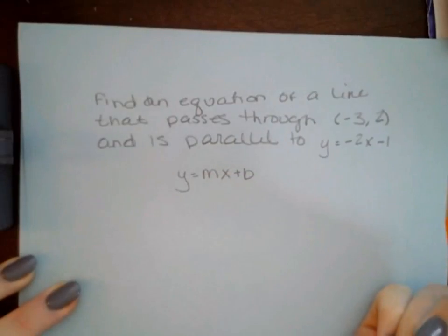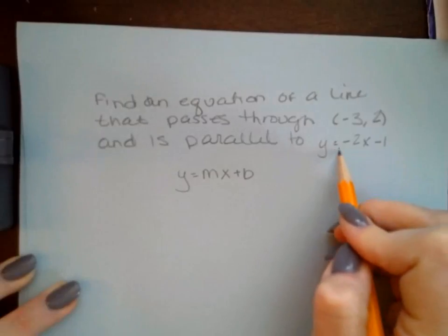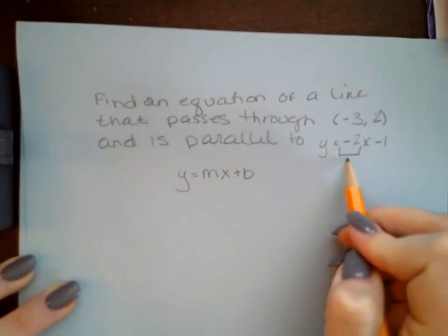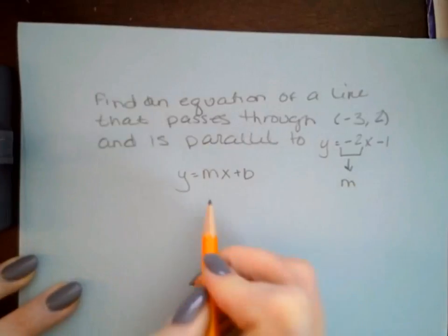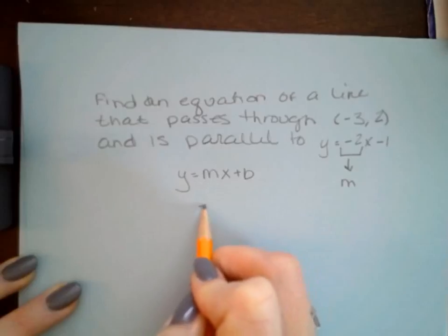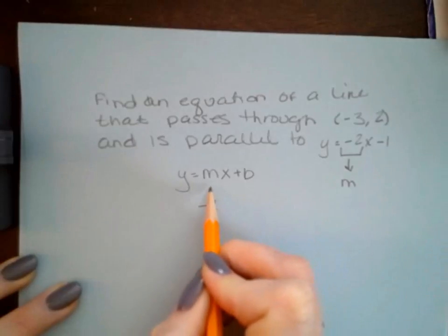Looking back at the information given in the problem, we know that the slope of our line is going to be -2, and that is because parallel lines have the same slope. So I can substitute -2 in right here for our slope.